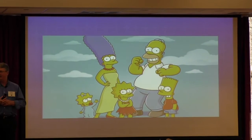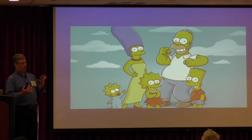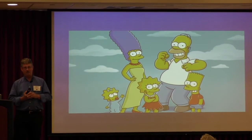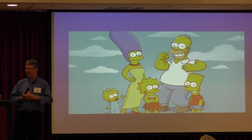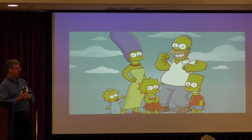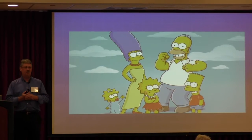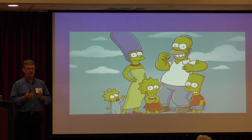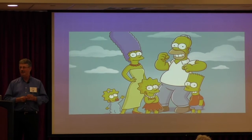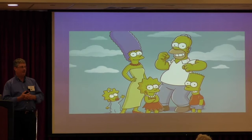As Homer got to meet the kids and the family, Herbert took a liking to Homer and really decided that Homer was an everyman. So Herbert said he wanted to invent a new line of automobiles, and believed Homer — because he's the everyman — would be the perfect person to design this car. What could go wrong?